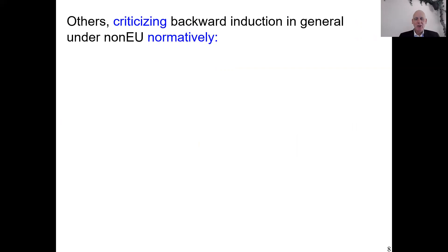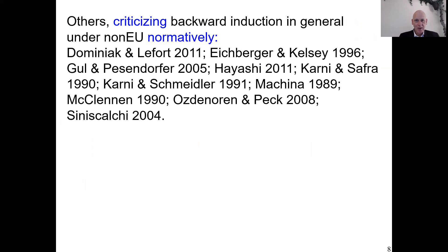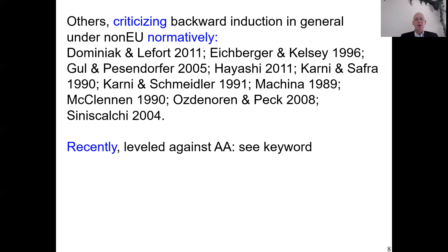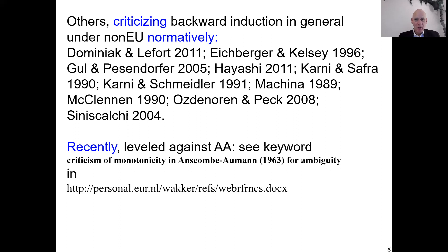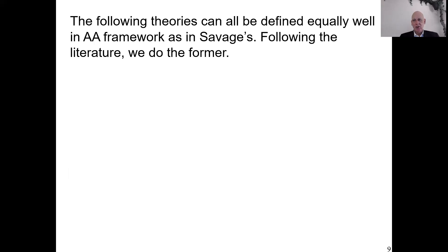Machina criticizes this backward induction, and many other people discuss and criticize it normatively in general. In the special context of the Anscombe-Aumann framework, many authors have recently shown it's not as innocent as it may seem. Anscombe-Aumann call it monotonicity — a misleading term — but it is more like weak separability, which is quite a restrictive assumption, criticized both normatively and descriptively. There is an annotated bibliography on the speaker's homepage with a keyword to find many papers discussing it. In the next recordings, I'm going to present all kinds of ambiguity theories alternative to what we did before — almost all formulated in the Anscombe-Aumann framework, and I will present them in that framework.